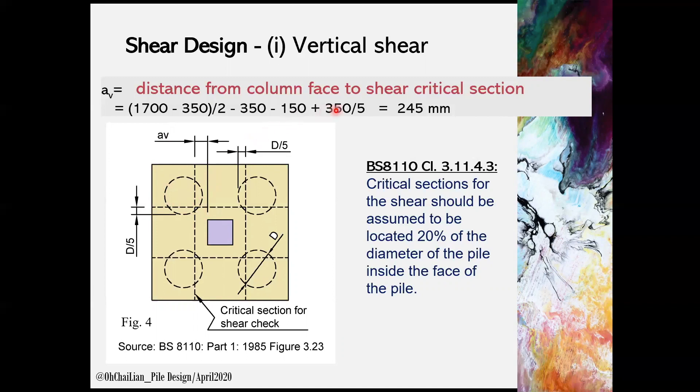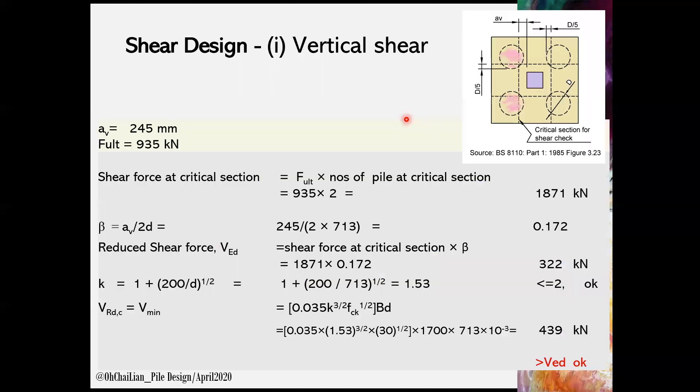Thus, here we have the AV is 245 mm. Shear force at the critical section can be obtained by multiplying the ultimate load per pile with total numbers of the pile at the critical section. In this case, the critical section across total of two numbers of piles. And beta is a ratio of AV to 2D.